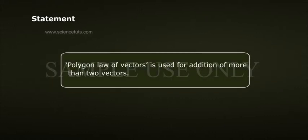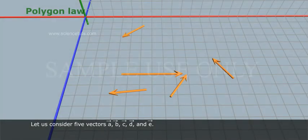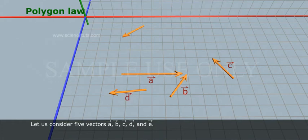Polygon Law of Vectors is used for addition of more than two vectors. Let us consider five vectors: A-bar, B-bar, C-bar, D-bar and E-bar.